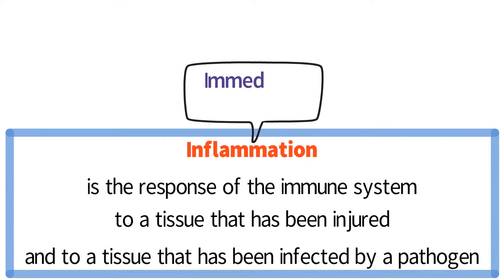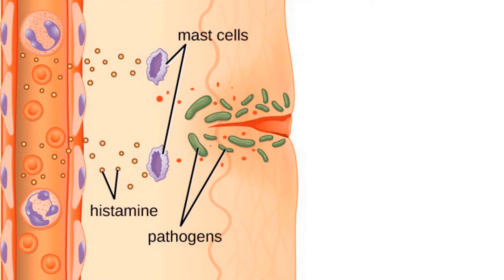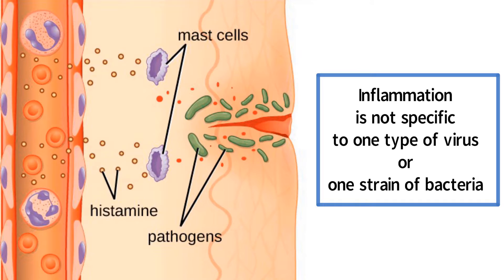Inflammation is immediate and non-specific. This means that inflammation can be triggered immediately upon detection of injury or infection. However, inflammation is not specific to one type of virus or one strain of bacteria. While this lack of specificity enables inflammation to be immediate, it also limits how thoroughly inflammation can resolve an infection.